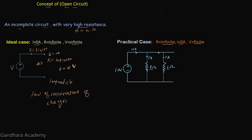The voltage at this point would be 10 volts because there is no resistance in the path of the voltage source, and also at this node the voltage would be 10 volts. Now there is an open circuit across the terminal of this voltage source. The resistance across this open circuit is infinite ohms because there exists an open circuit between these two nodes, and the current through this open circuit is zero amperes.